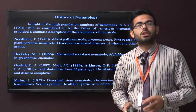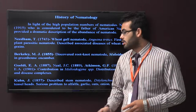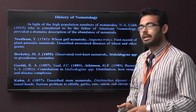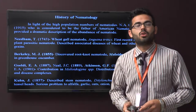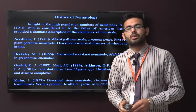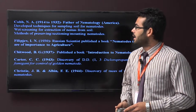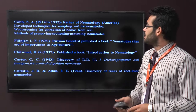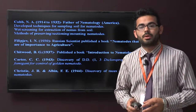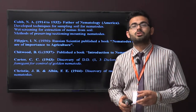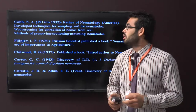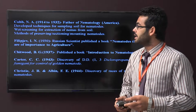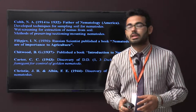Detailed ancient species on the tissue layers, presenting a serious problem to alfalfa, garlic, oats, onion, red clover, and rye. Then N.A. Cobb, the father of nematology, developed techniques for sampling soil for nematodes and wet screening extraction for nematodes from soils.